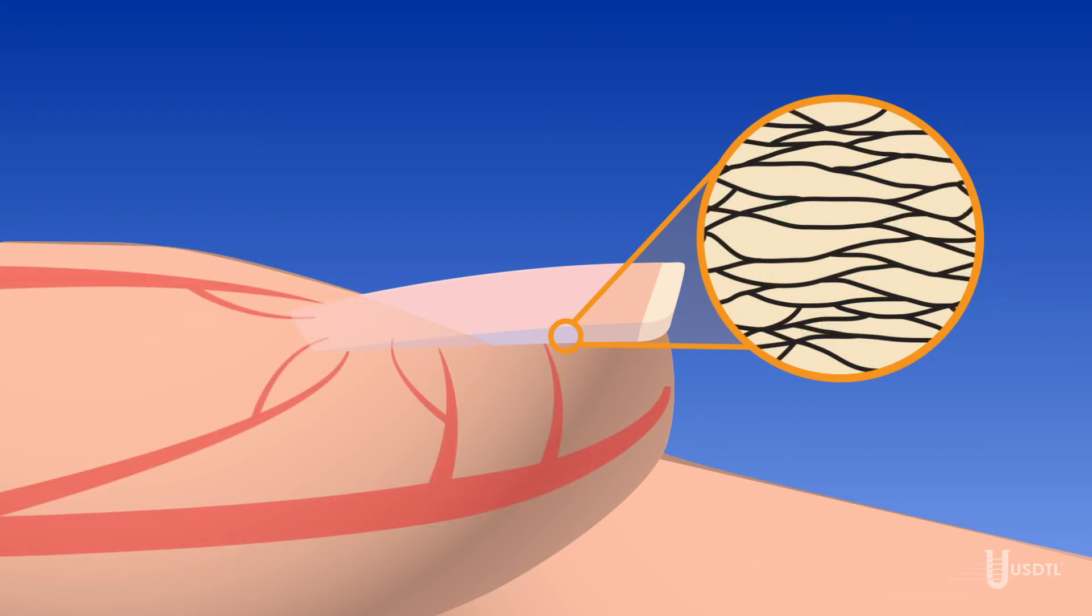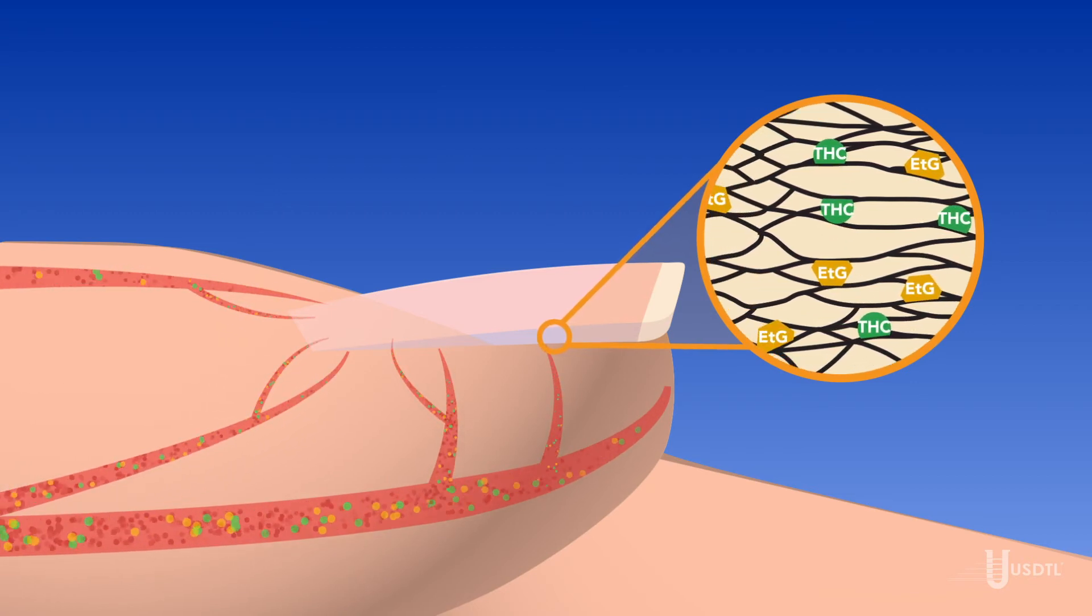The third route of incorporation is the blood flow in the germinal matrix, depositing drug and drug metabolites as the nail is forming.